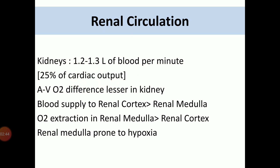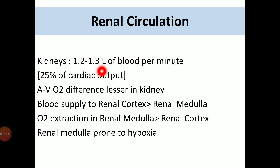That 1.2 to 1.3 liters per minute is 25% of the cardiac output, which is comparatively higher than the heart and brain. The arteriovenous oxygen difference in the kidney is lesser — meaning the amount of oxygen being extracted from the blood supply towards the kidney is lesser in comparison to the heart and brain. So the amount of oxygen consumption in the kidney is comparatively lesser.